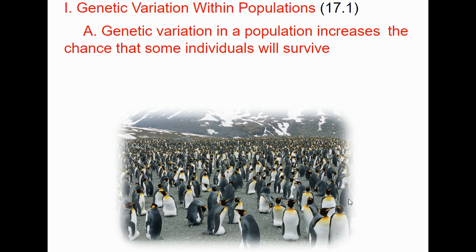Genetic variation is based on what traits help certain organisms survive better. With these penguins, slightly different wing shapes allow some to swim better, hunt prey, and evade predators more effectively. Those traits — those alleles — will increase in the population if they give an advantage. We want genetic variation; we don't want all organisms in a population to be completely identical. If a disease wipes out one organism and they're all identical, it will wipe out all of them.